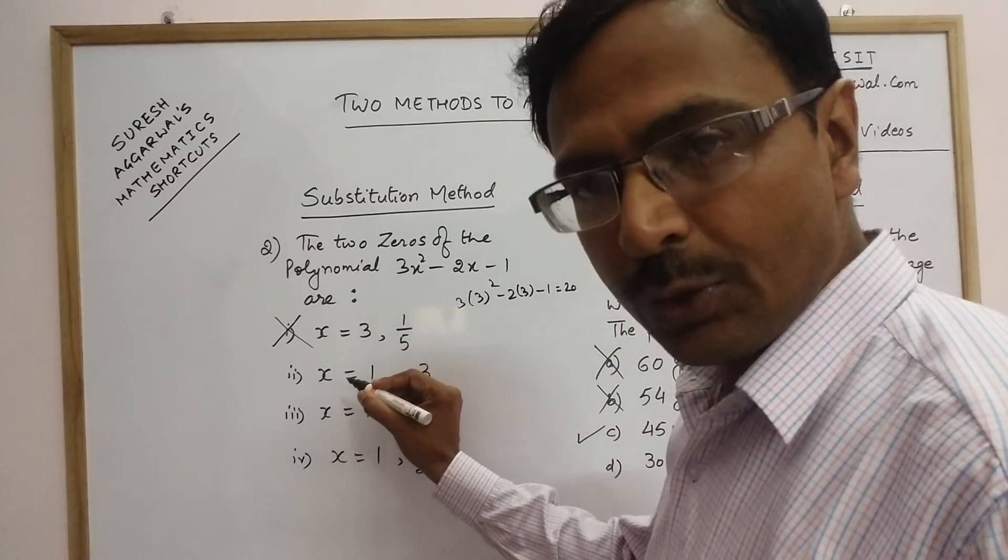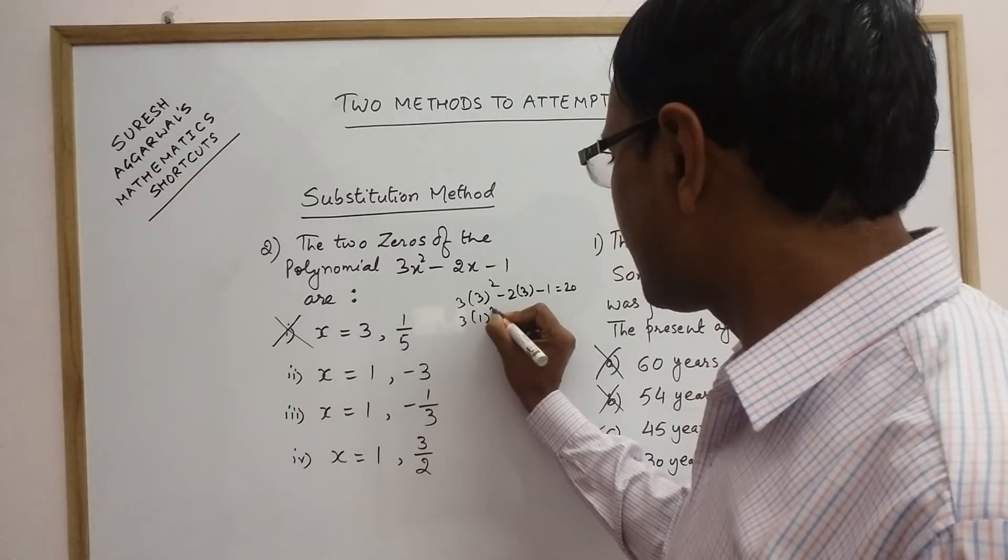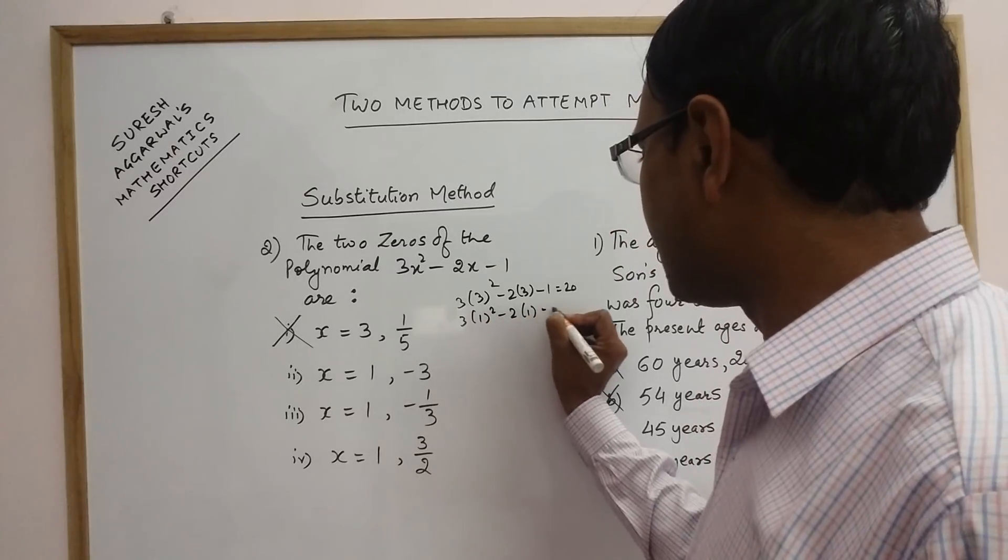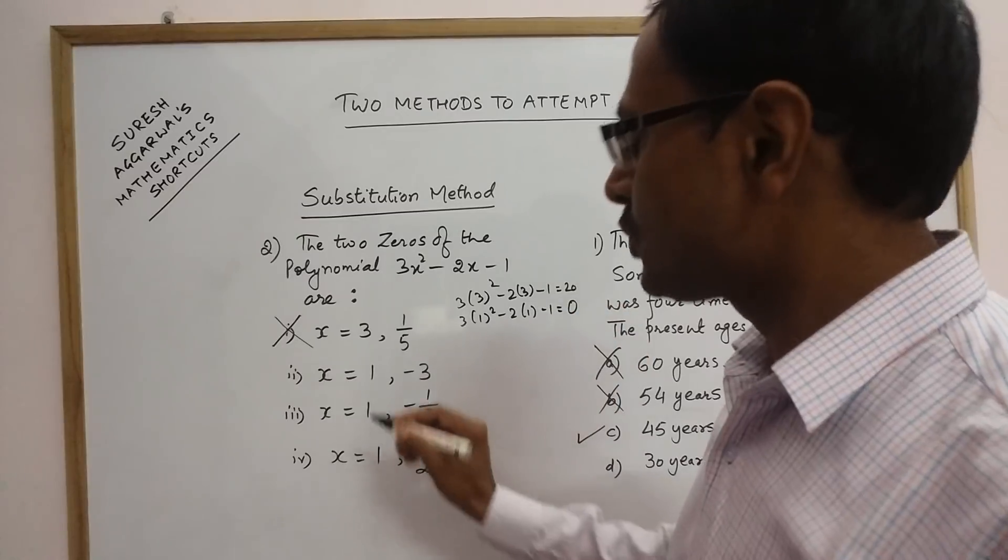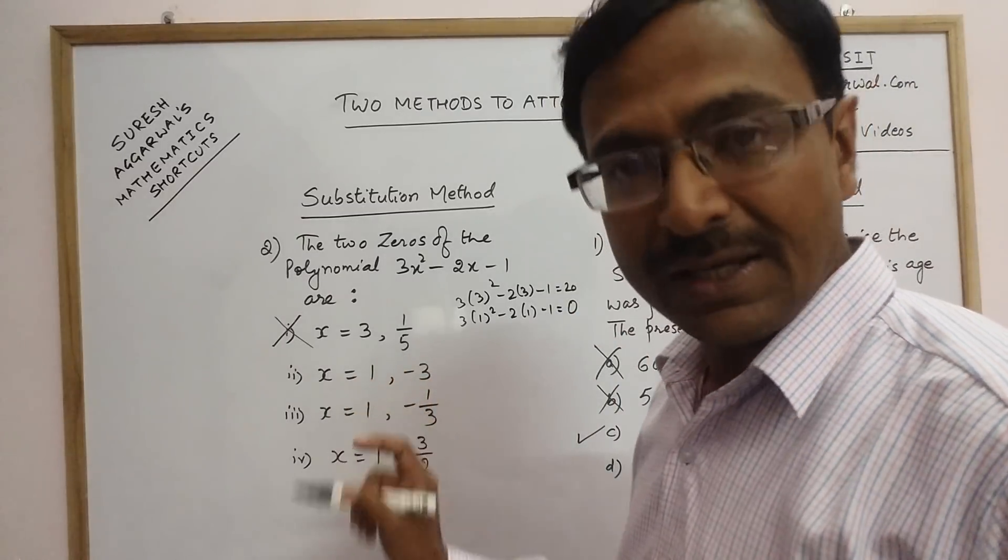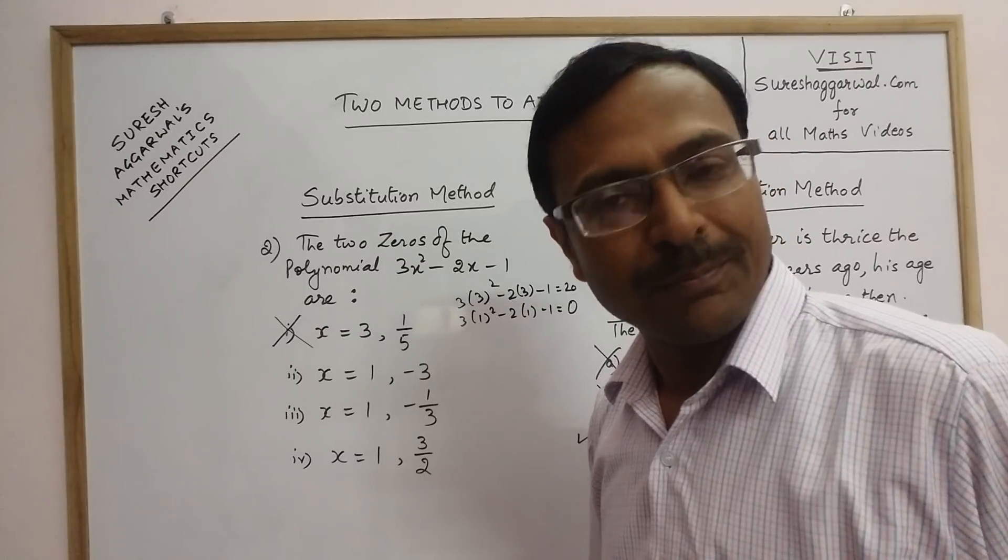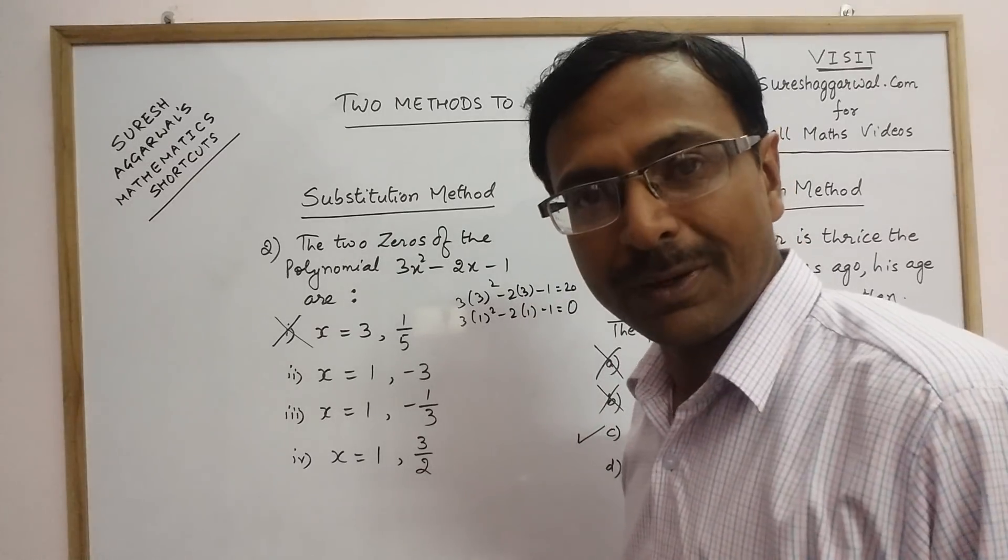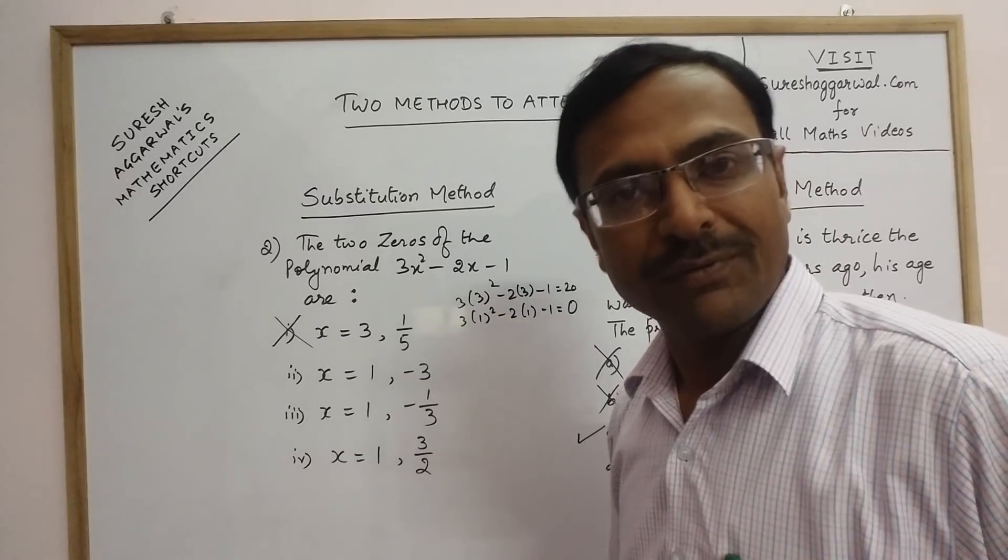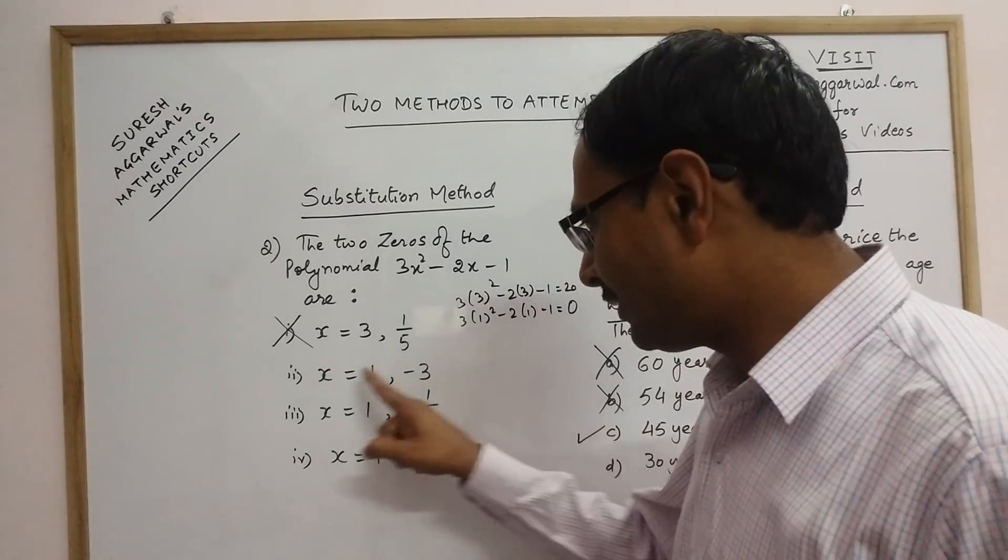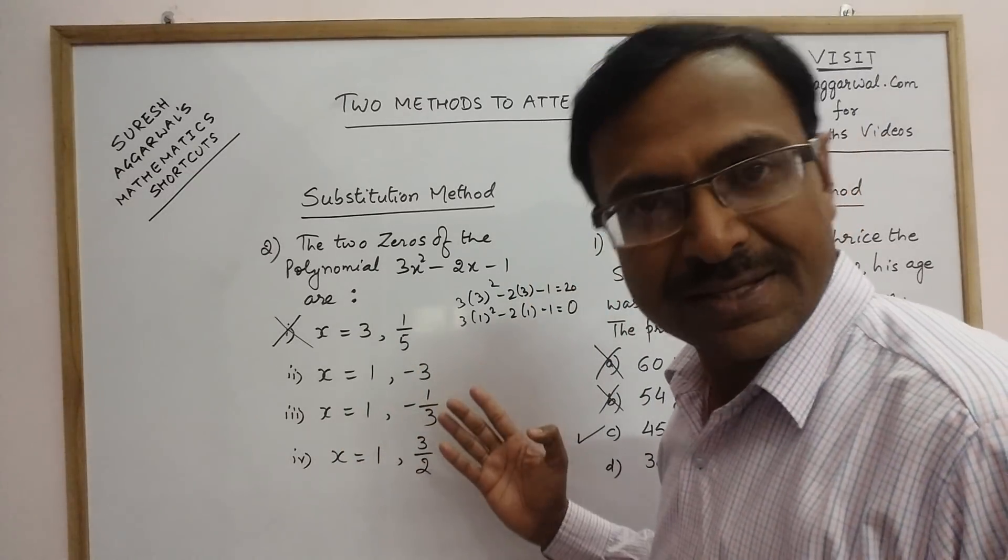Now, just see x equal to 1. If you put x equal to 1, 3 into 1 square minus 2 into 1 minus 1. So, 3 minus 2 minus 1 is 0. So, obviously, x equal to 1 is one of the zeros. But again, the answer is not that simple. Anyone who makes the question paper increases the degree of complexity for you. So, the first zero obviously is x equal to 1, but it is given in all the three options. So, you have to check the second zero.